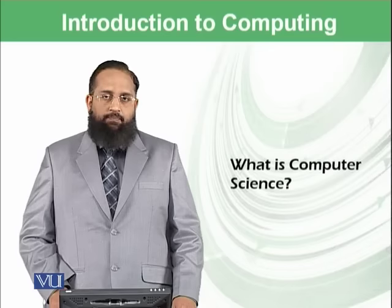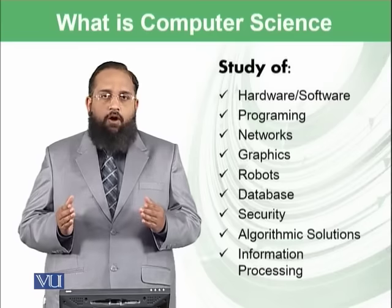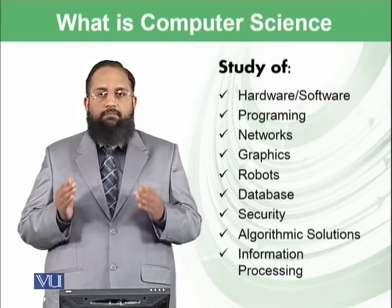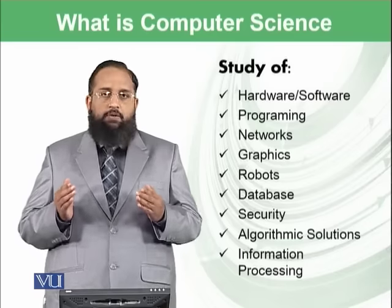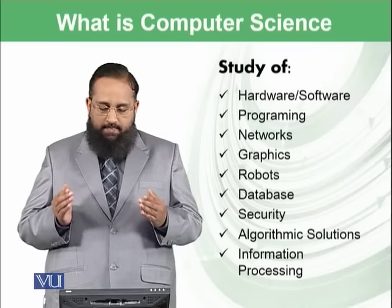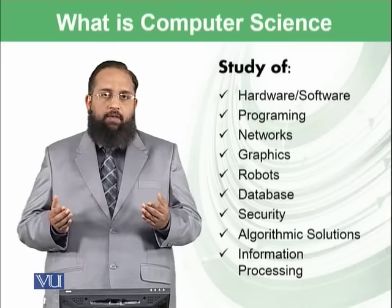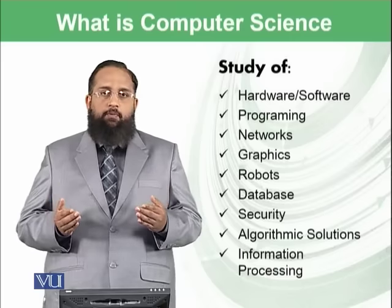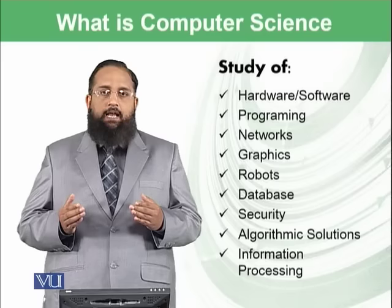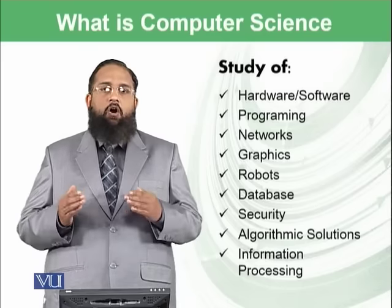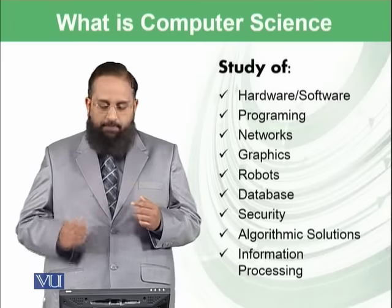So first of all, what is computer science? Computer science is the study of hardware, software, programming, networks, graphics, robotics, database, security, algorithmic solutions, and information processing. Computer science is such a vast field nowadays that it has applications in almost every field of the real world.